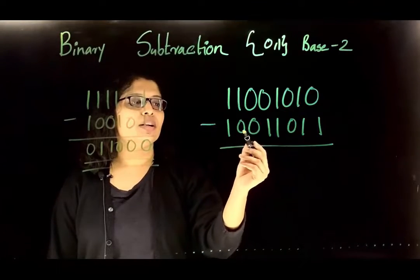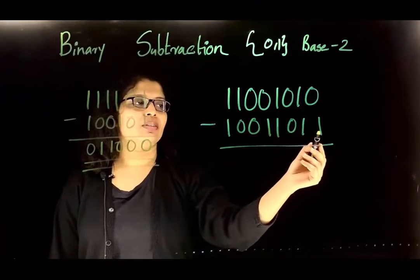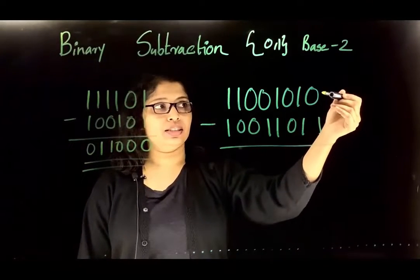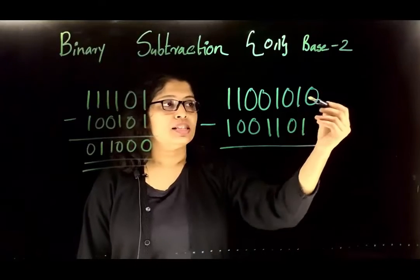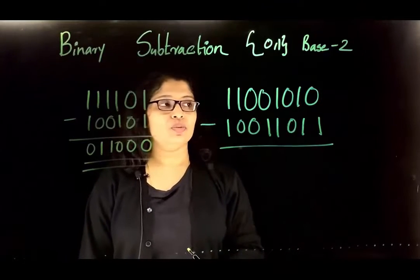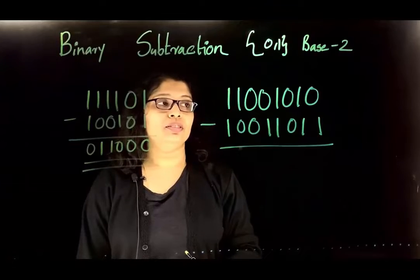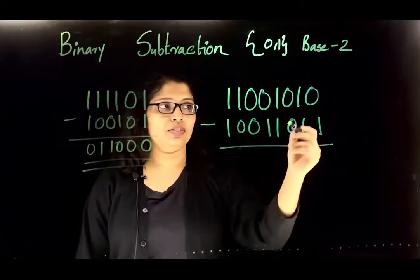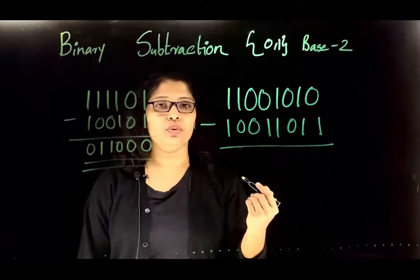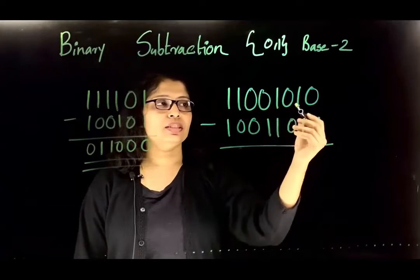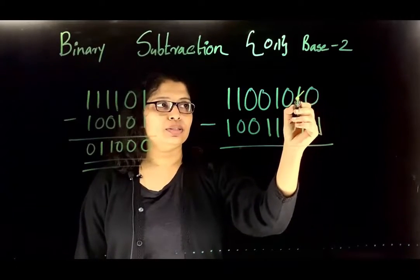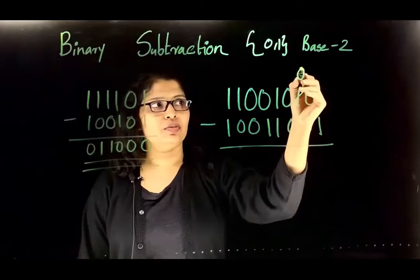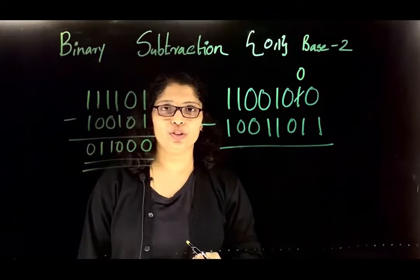Next case: 11001010 minus 10011. Start from the LSB position. Here we have 0 and 1 — 0 minus 1 is not directly possible, so we need to borrow from the neighbor. The immediate neighbor has value 1, so we can borrow. While borrowing, reduce that value by 1: 1 minus 1 becomes 0.